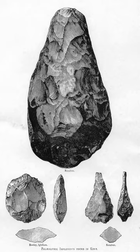Homo erectus – upright man – lived about 1.8 to 1.3 million years ago in West Asia and Africa, and is thought to be the first hominid to hunt in coordinated groups, use complex tools, and care for infirm or weaker companions. Homo antecessor, the earliest hominid in northern Europe, lived from 1.2 million to 800,000 years ago and used stone tools. Homo heidelbergensis lived between 600,000 and 400,000 years ago and used stone tool technology similar to the Acheulean tools used by Homo erectus.